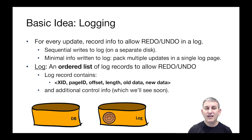The basic idea with logging is that for every update that we make in a transaction, we will record info to allow redo and undo in a log. We're going to make this log sequential writes on a separate disk device, hopefully just writing sequentially to the tail, to the end of this log. So it goes very fast. We're going to write very minimalist info into that log — not only will it be efficient I/O, but we'll be able to pack multiple updates into a single log page, even though they represent updates to lots of database pages.